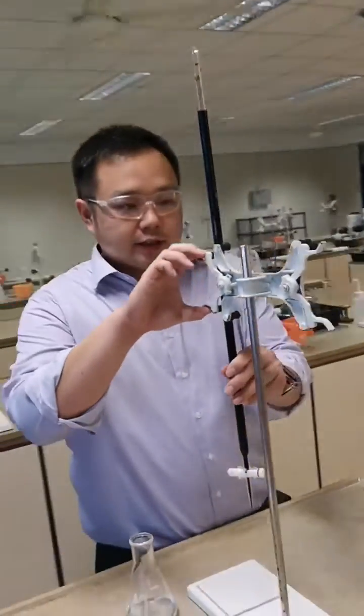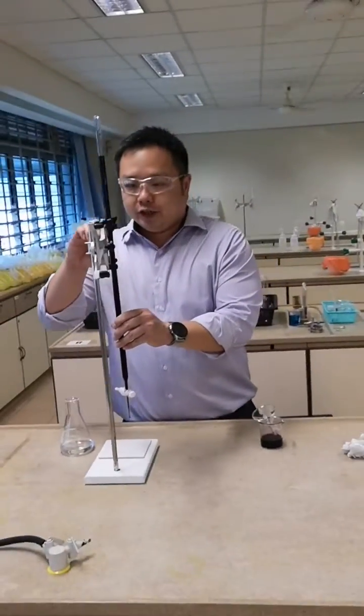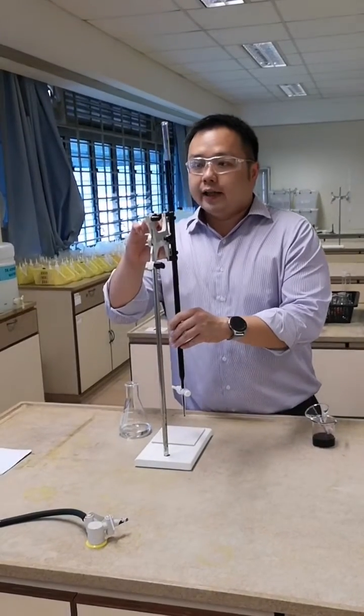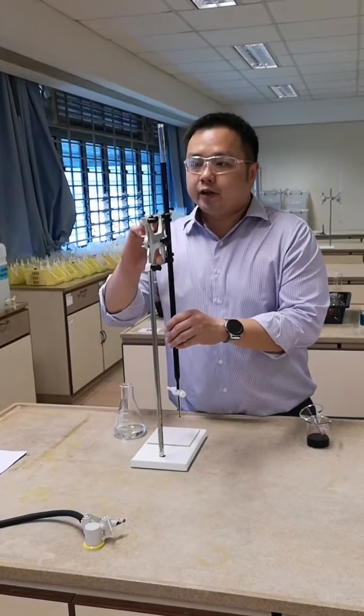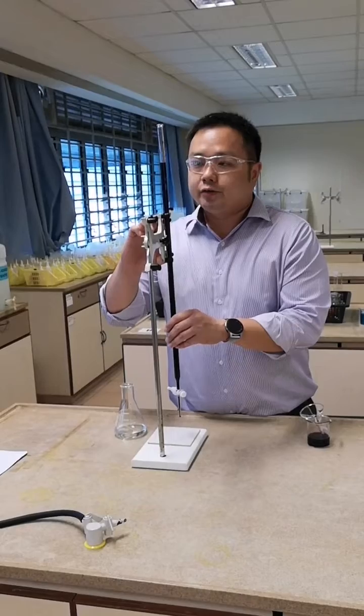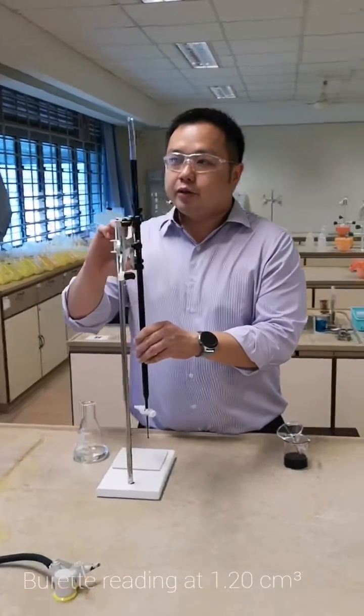Before you start the titration, it is good to check and read the burette at eye level so as to prevent any parallax error. The reading over here reads 1.20 cm³.